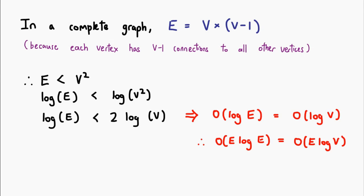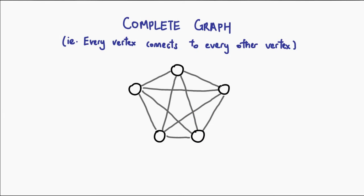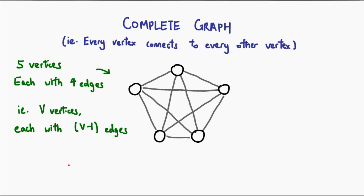You see, in a graph, E must be less than V². The reason why this is so is because in a complete graph, that is, we try to stuff as many edges into the graph as possible, every vertex will have V - 1 edges,